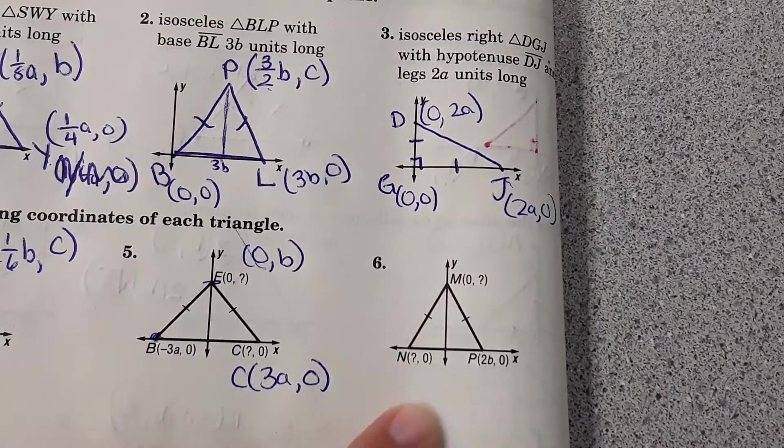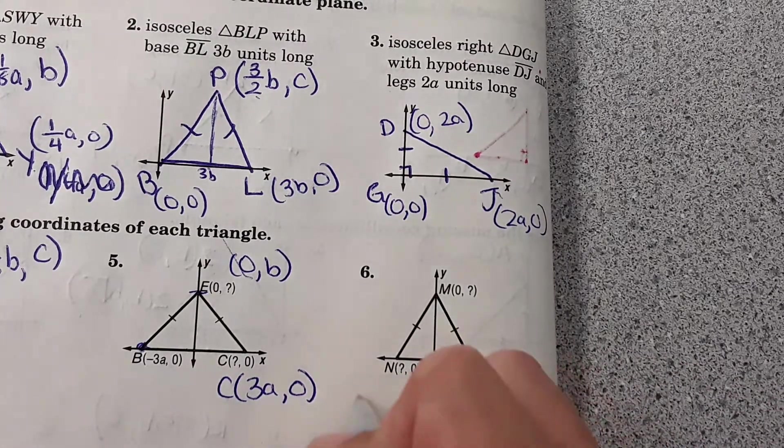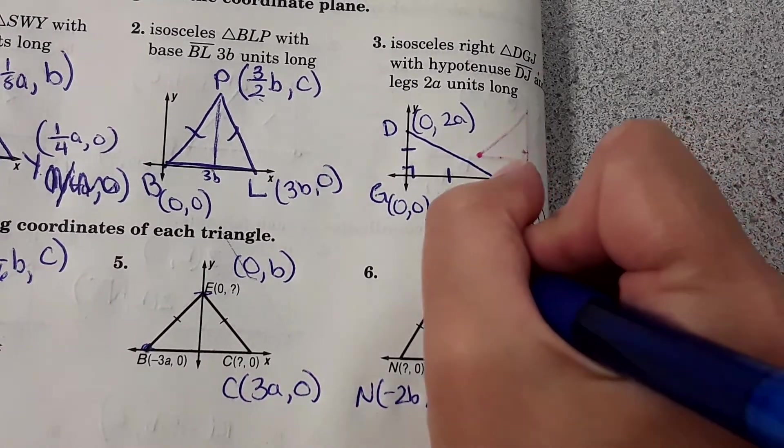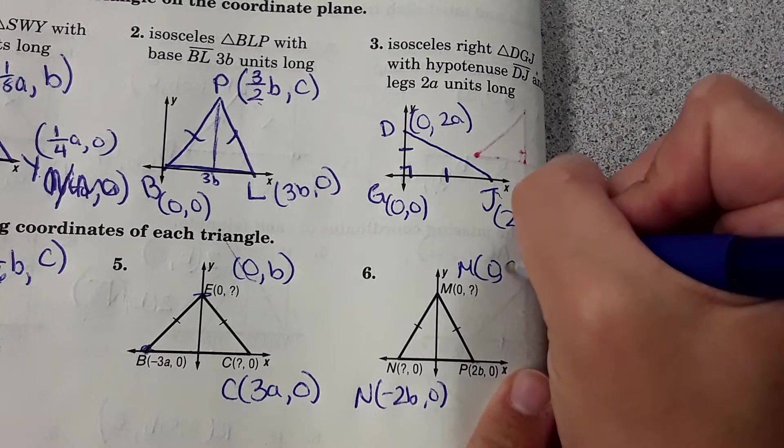And then number six. It's over here positive 2B this way, would be negative 2B, zero. And then the height here would be zero, and we'll choose C.